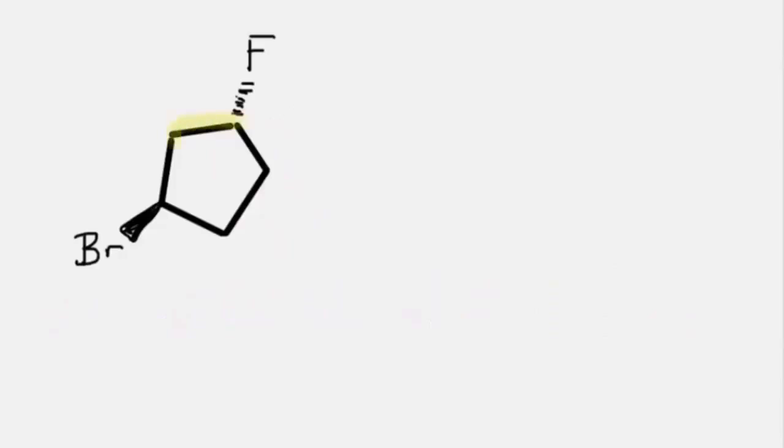For the next structure, the parent chain is the 5-carbon cyclic ring. This would be cyclopentane. And for substituents, we have 2. These are 2 halogens. One is fluorine, the other is bromine.